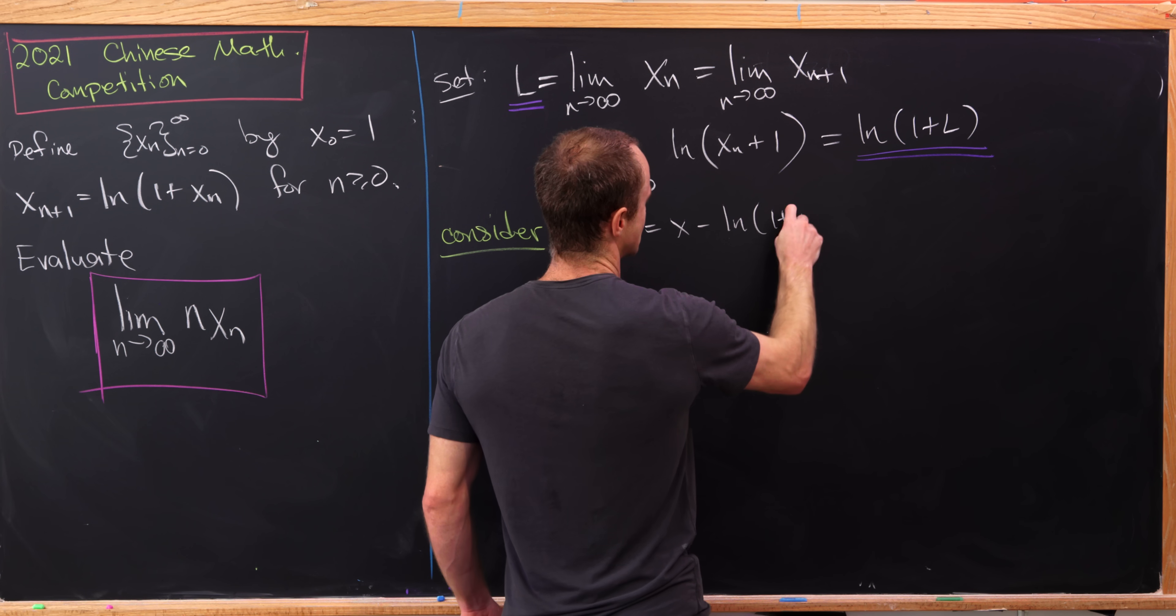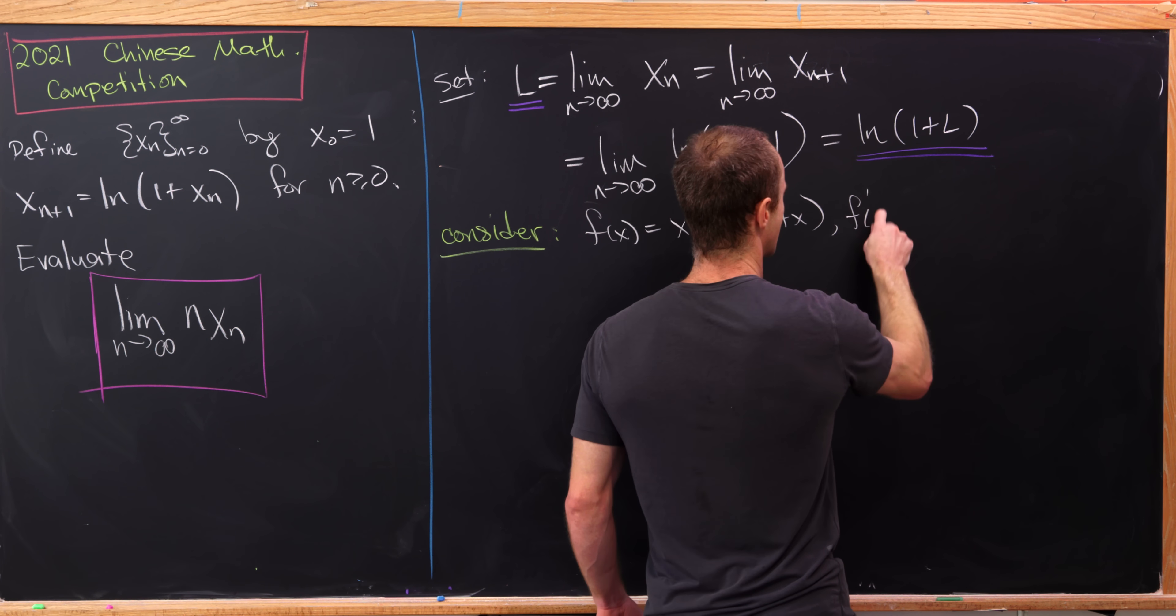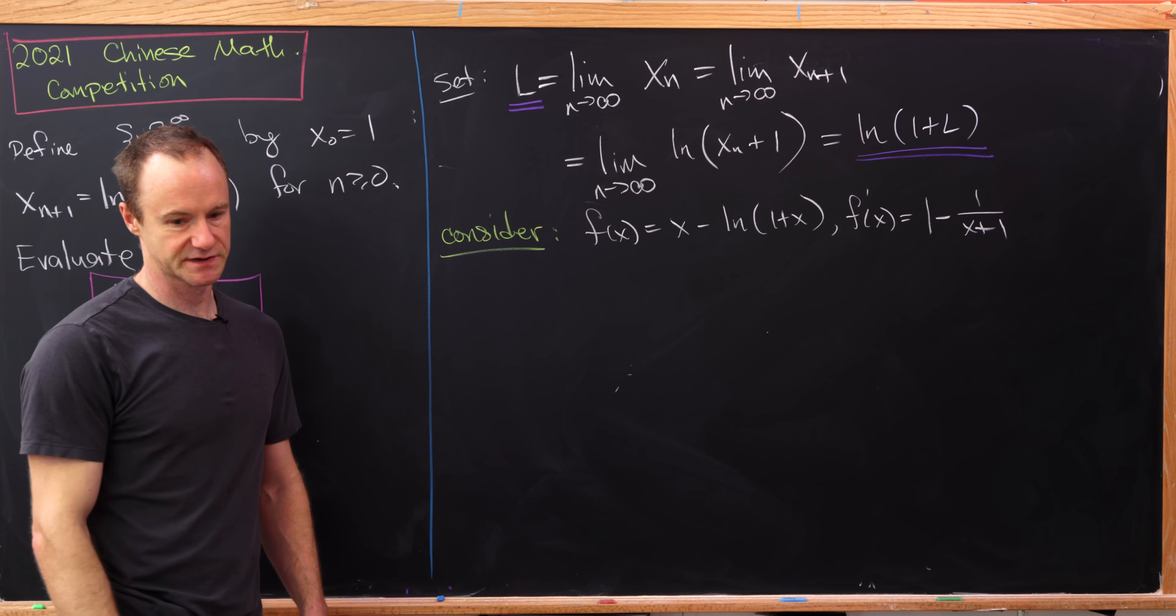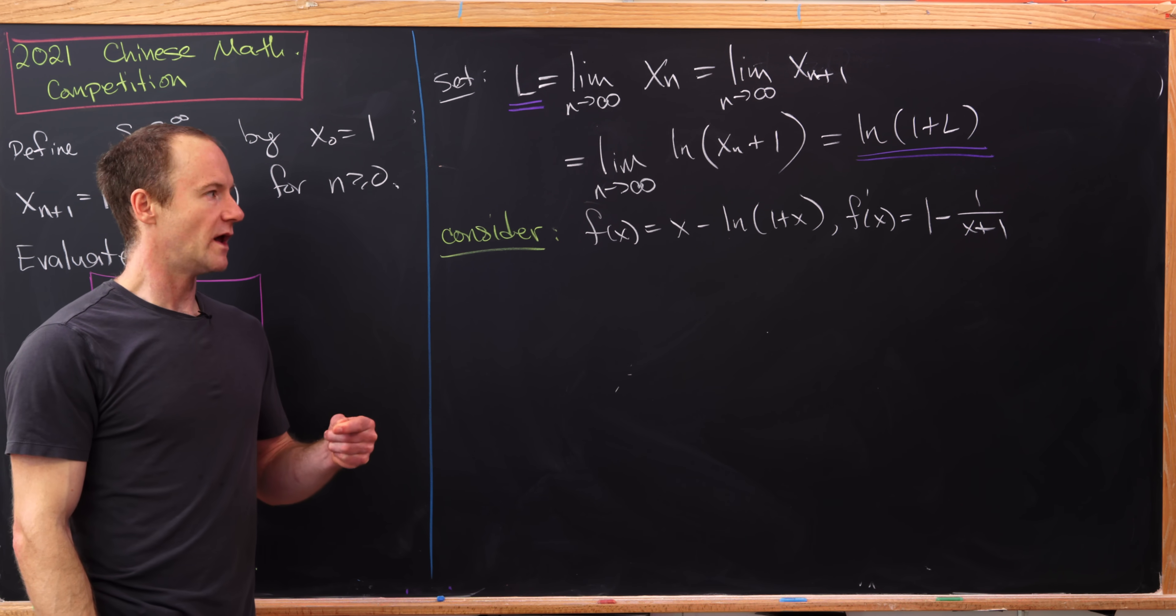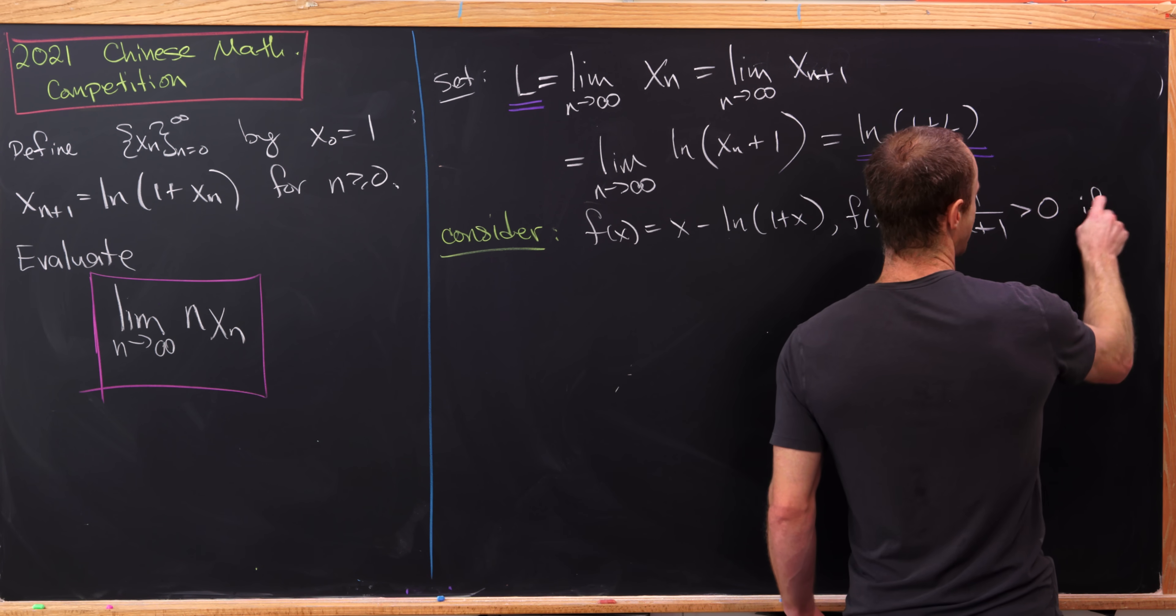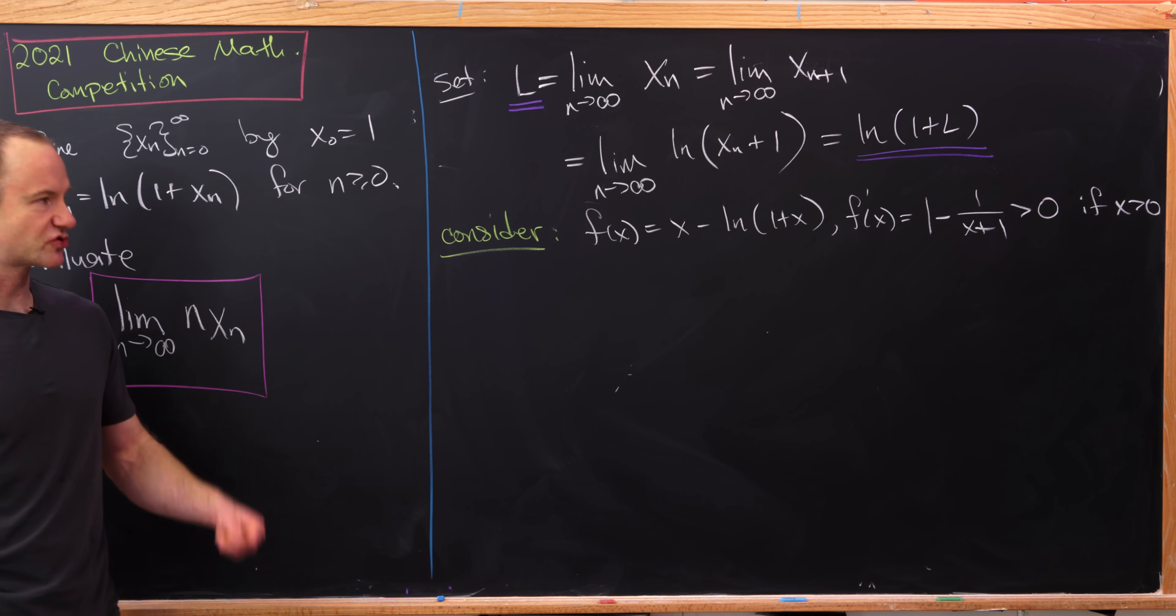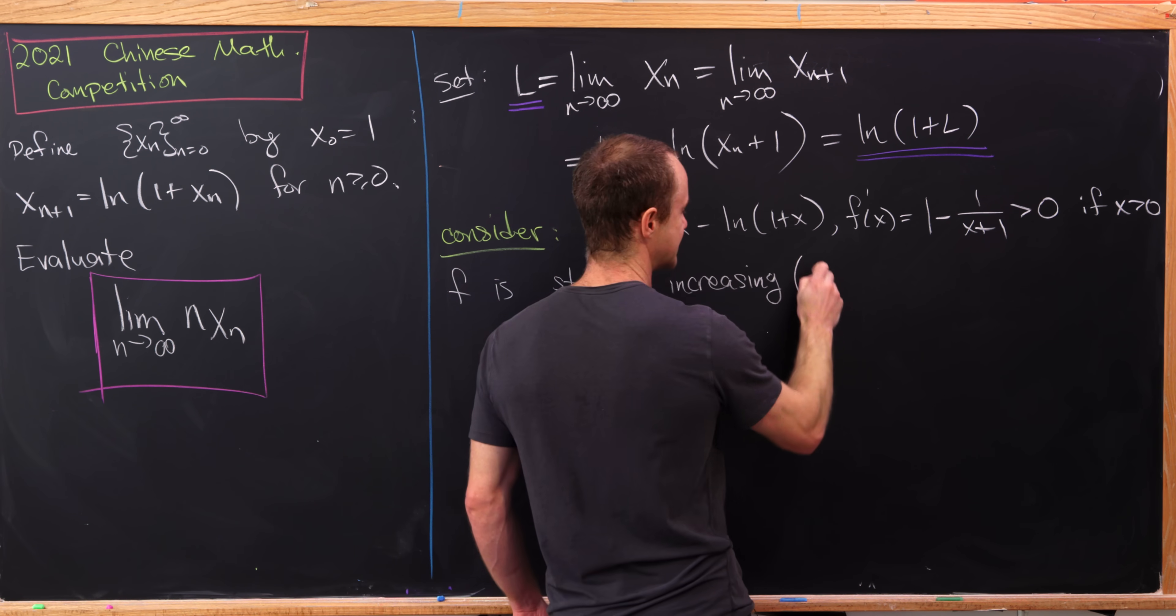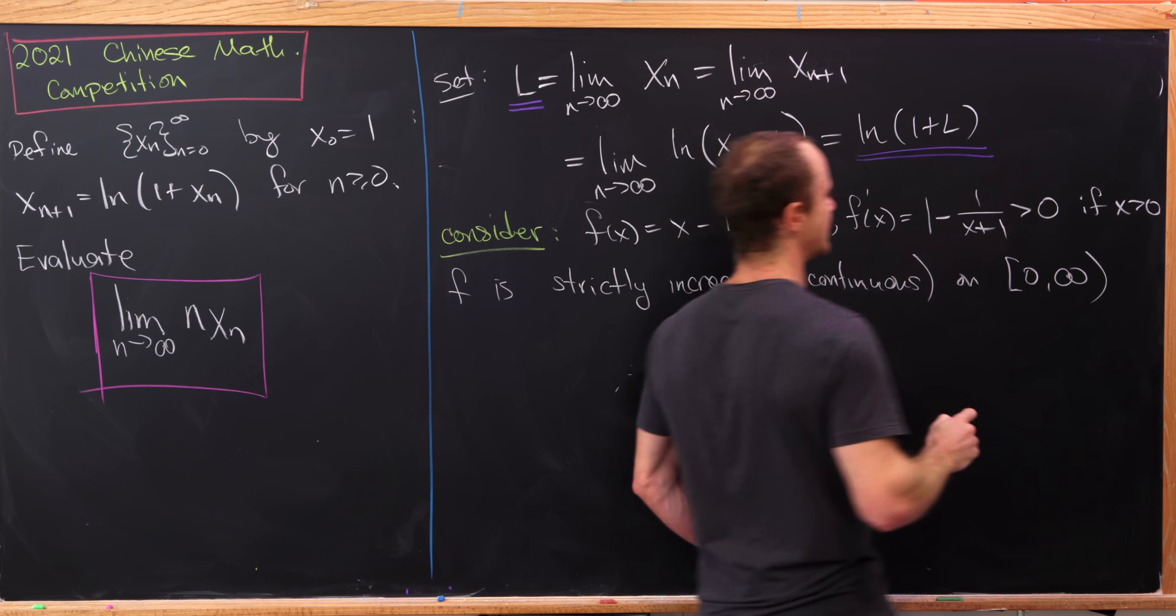So I'll call this f(x). It'll be x minus the natural log of 1 plus x. And let's observe that if we take the derivative here, we'll get 1 minus 1 over x plus 1, just by simple derivative rules. But observe that for x values that are positive, 1 minus 1 over x plus 1 is always positive. So this is positive if x is positive. That means this is a strictly increasing function. So f is strictly increasing and continuous on the interval from 0 to infinity, including 0.